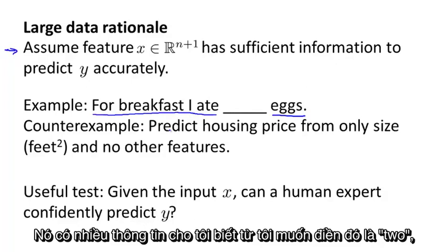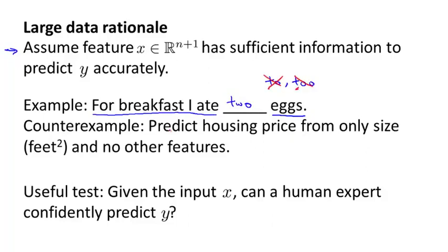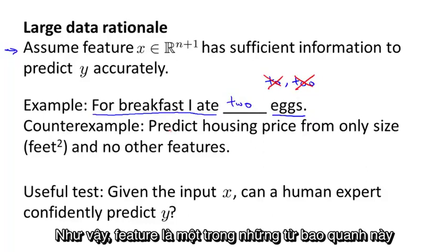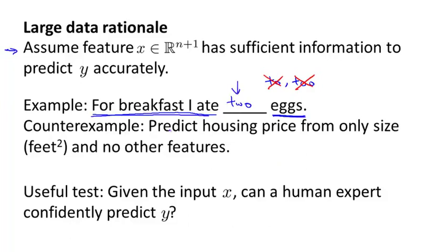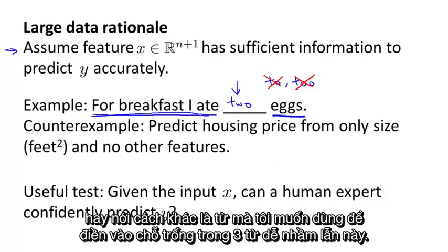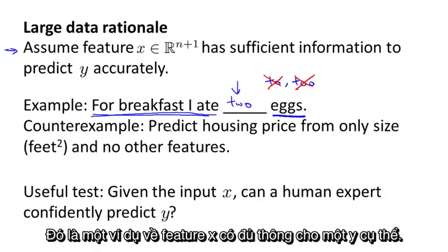Then that's pretty much enough information to tell me that the word I want in the middle is T-W-O, and that is not the word T-O, and it's not the word T-O-O. So the features capture what are the surrounding words, then that gives me enough information to pretty unambiguously decide what is the label y, or in other words, what is the word that I should be using to fill in that blank out of this set of three confusable words. So that's an example of where the features x have sufficient information to predict y.